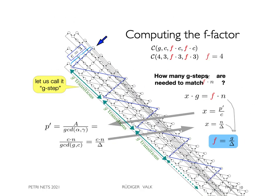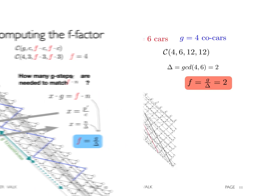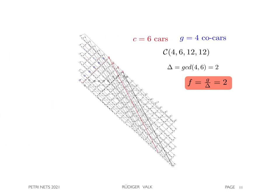Finally, the co-car anomaly is explained by computing the so-called f-vector, which describes the necessary extension to obtain the anomaly. This extension is a temporal extension, which is proved using cycloid algebra.